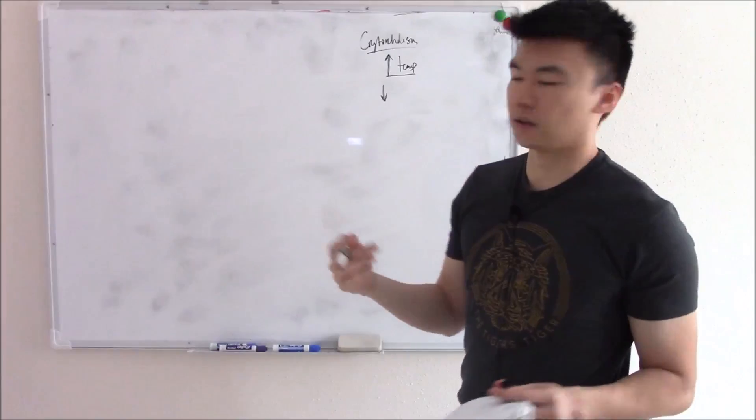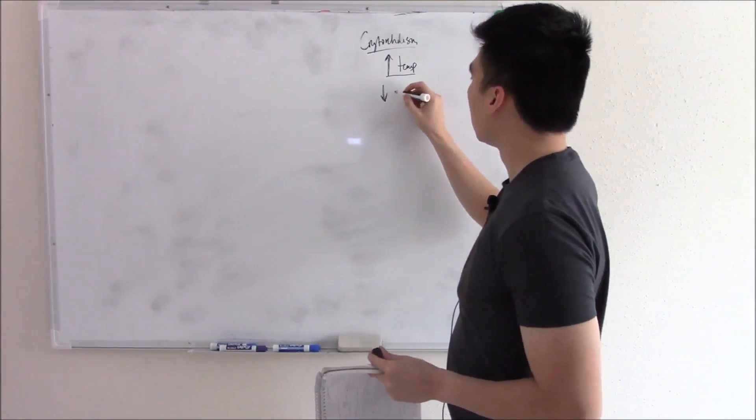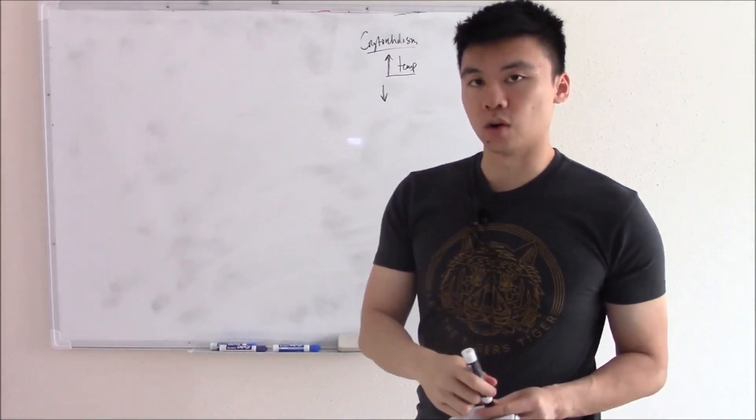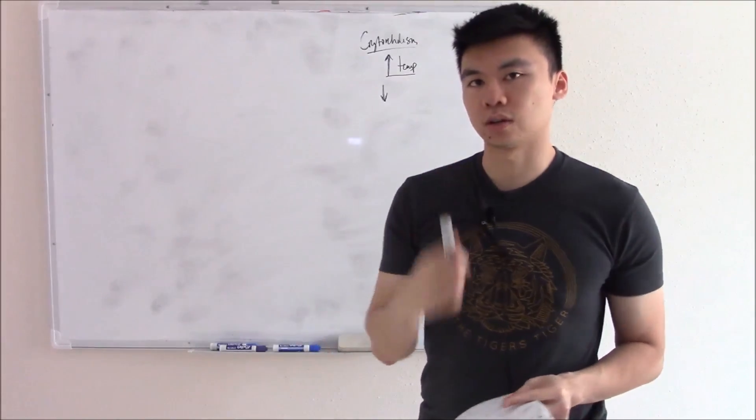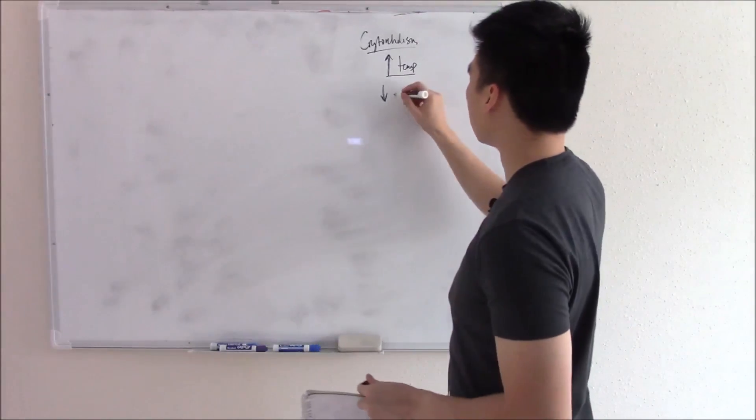Your Leydig cells, they're fine. They're not temperature sensitive. And with decreased Sertoli cells, you don't create a hormone. Do you remember that hormone's name? That'd be your inhibin.